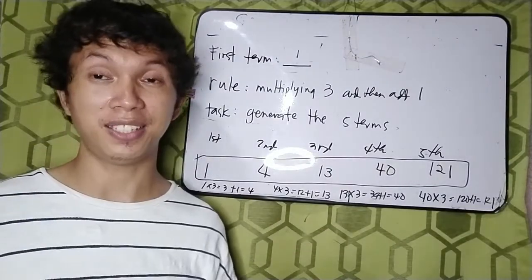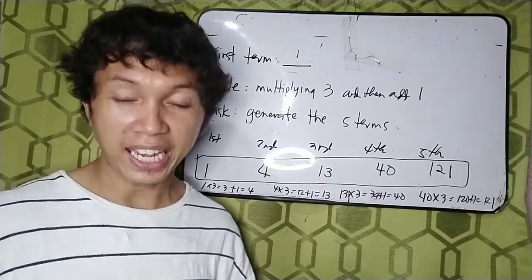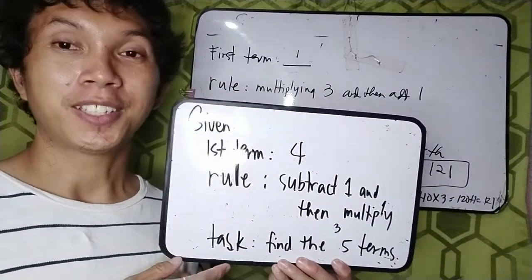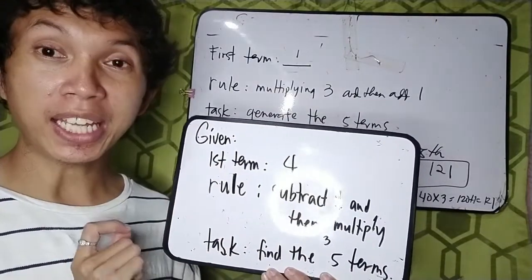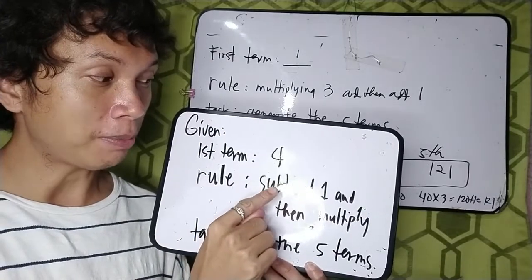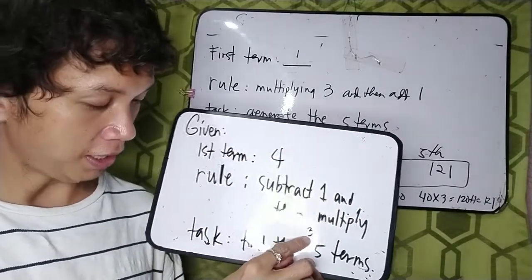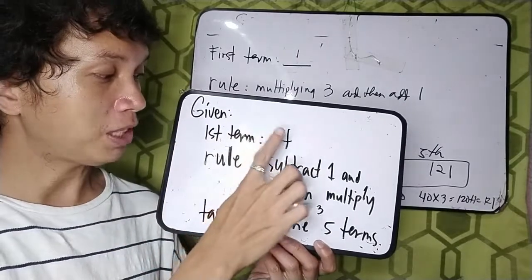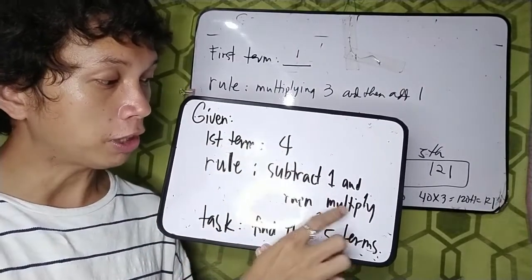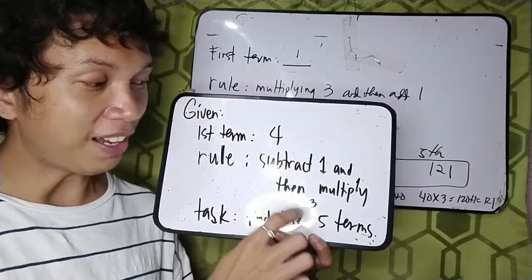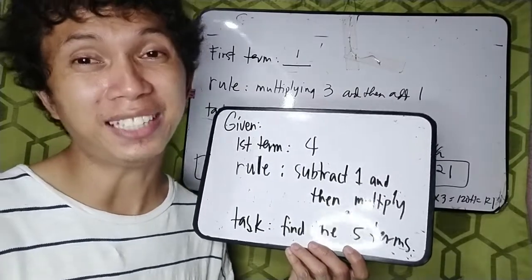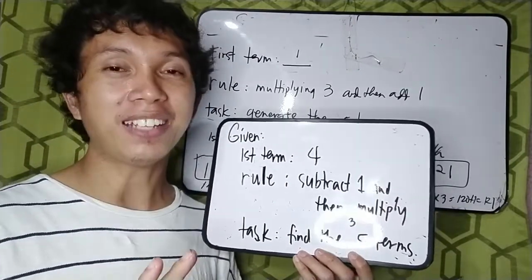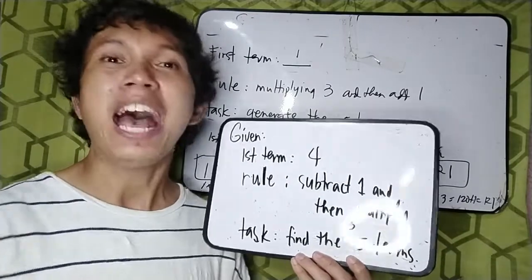Do you have any questions? I hope you learned something. Now it's time for a self-check. Given the first term is 4, the rule is subtract 1 and then multiply by 3, and your task is to find the 5 terms. Comment down your answers below, and for the first 3 who get the correct answer, I'll be shouting you out in our next video. Have a nice day. Bye-bye!